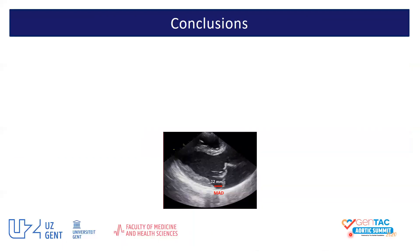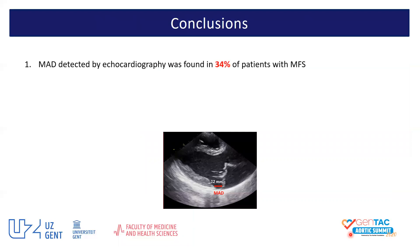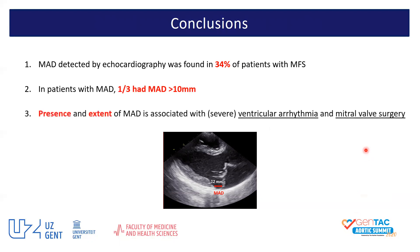To conclude, MAD was found in 34% of our patients. In patients with MAD, one-third had MAD distance above 10 mm. Presence and extent of mitral annular disjunction is associated with ventricular arrhythmia and mitral valve surgery in patients with Marfan syndrome. Thank you for your attention.